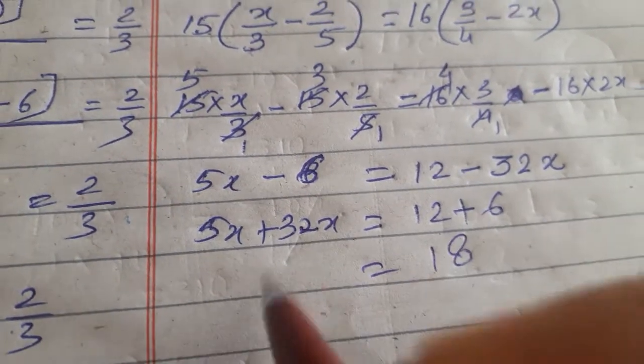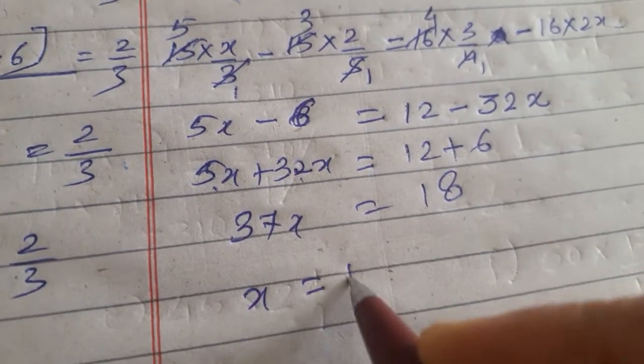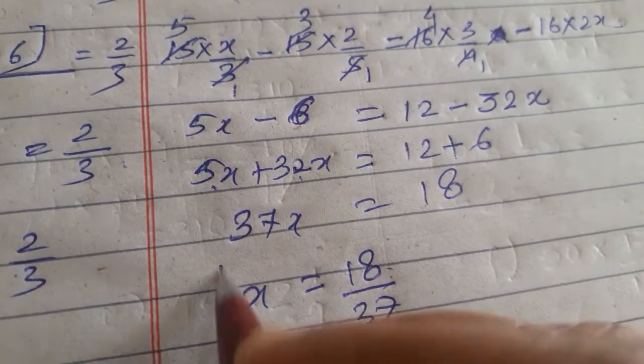So, ye ho amare paas 18 aya, or ye kitna ho gaya? 37x. x is equal to 18 upon 37.